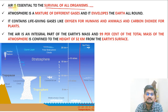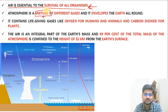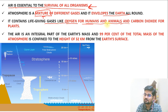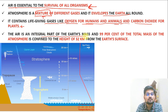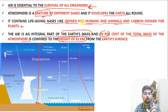Air is essential to the survival of all organisms — life on Earth is an important attribute related to the atmosphere. The atmosphere is a mixture of different gases. Remember, atmosphere is not an element, it is not a compound; rather it is a mixture of different gases that envelops the Earth all around. It contains life-giving gases like oxygen for human beings and animals, and carbon dioxide for plants — maintaining the O₂/CO₂ balance. Also, 99% of the total mass of the atmosphere is confined to a height of about 32 kilometers above Earth's surface.